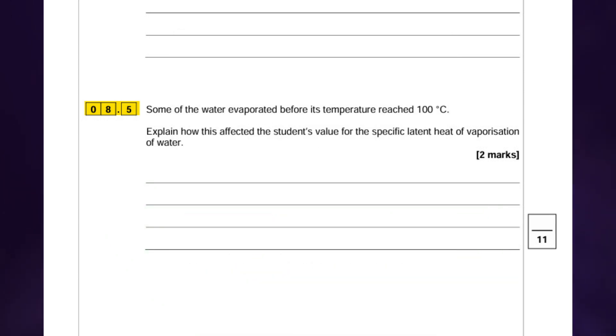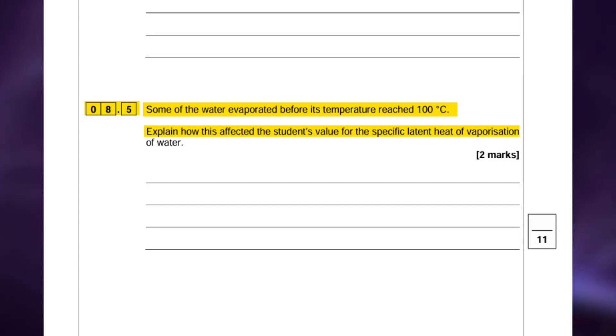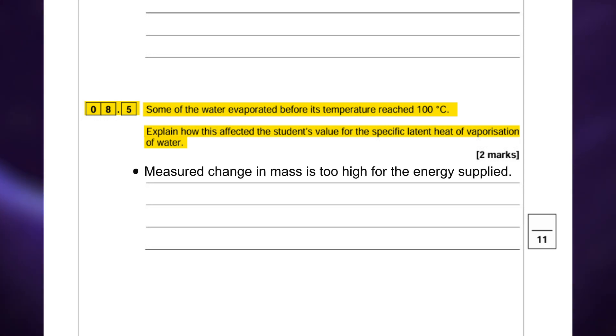The question states that some of the water evaporated before its temperature reached 100 degrees celsius. Explain how this affected the student's value for the specific latent heat of vaporization of water. For the first mark you should have put the measured change in mass is too high for the energy supplied, and for the second mark you're going to explain that this means that the student's value of L is too low.